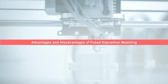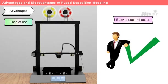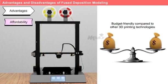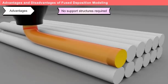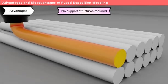Advantages and disadvantages of fused deposition modeling. The first advantage of FDM printers is ease of use — FDM printers are relatively easy to use and set up, making them accessible to beginners and hobbyists. Second is affordability: FDM printers are generally more budget-friendly compared to other 3D printing technologies. Third is a wide range of materials: one of the greatest strengths of FDM is its ability to work with a wide variety of thermoplastic materials. Fourth, no support structures are required — FDM's unique layer-by-layer approach reduces the need for extensive support structures.